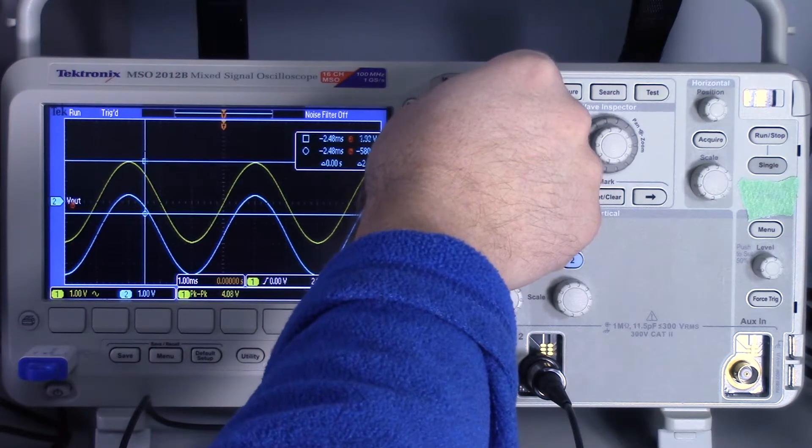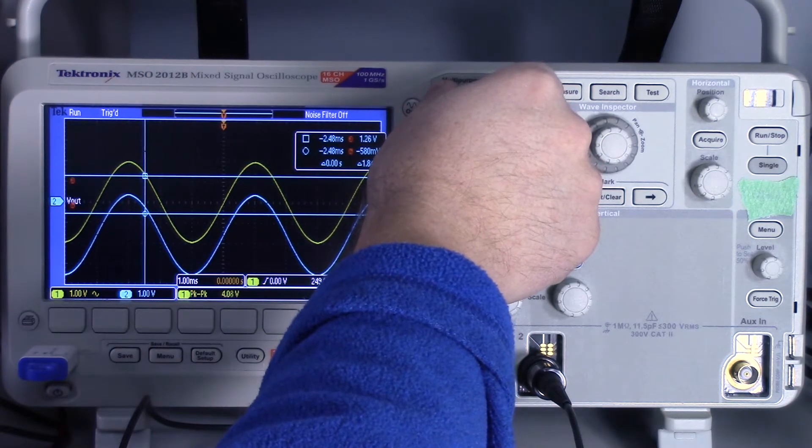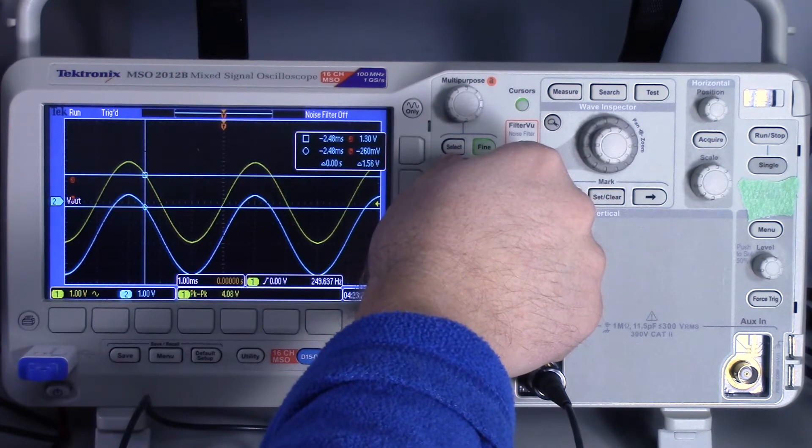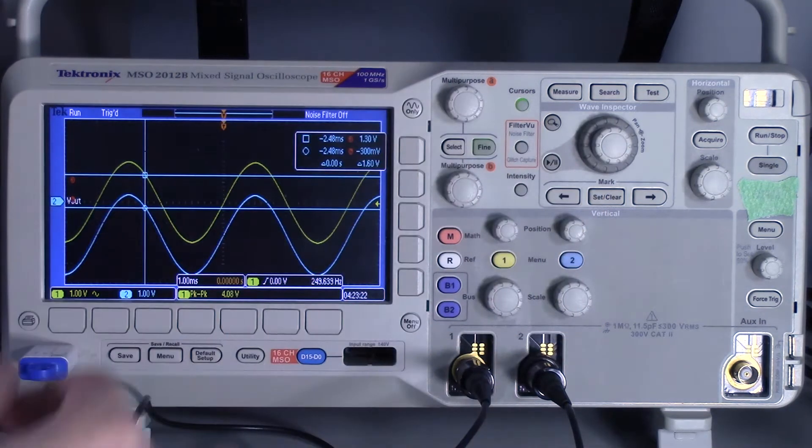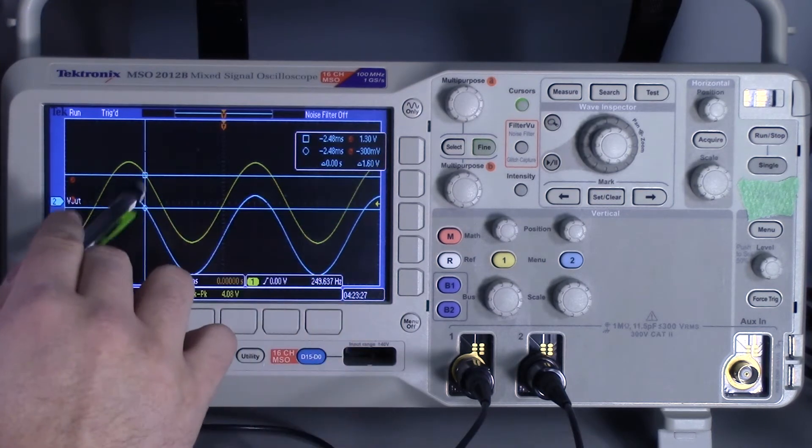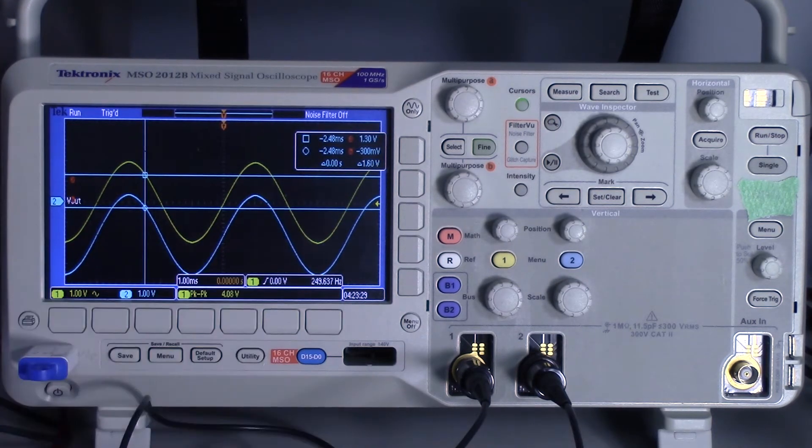So here we can say our delta V between these two points is 1.6 volts. Now if we want to confirm that this is actually a continuous 1.6 volts, we can actually just repeat that.